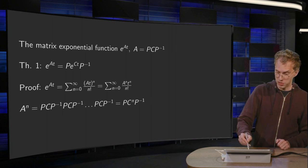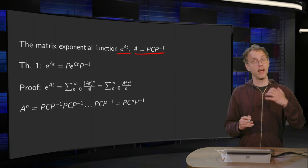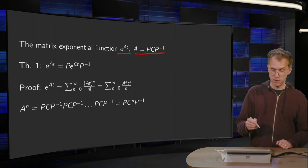So the matrix exponential function e to the power at where A is similar to C, so A equals PCP inverse. So how do we compute that?